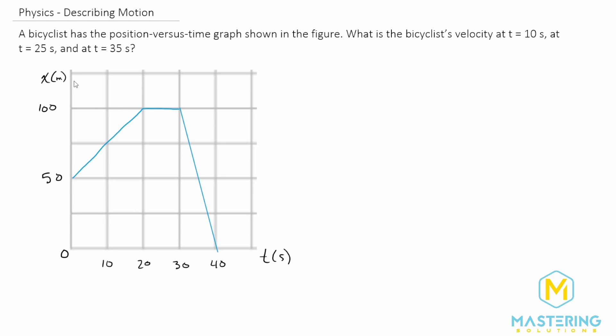Whenever we have a position versus time graph, we can take the slope of a line or the slope at a given point and that will give us the velocity. So for 10 seconds, for example, the whole line right here is the same slope, so we can find what the slope is from 0 seconds to 20 seconds because it's easier to work with to tell us what the slope is right here as well.